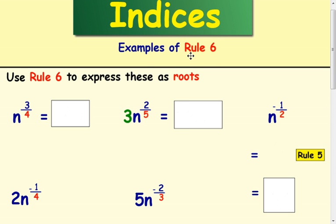In this lesson, we're going to look at some examples of Rule 6. So, the first example here, n to the power of 3 over 4. Now, we have to express these as roots. So, we know the bottom is the root and the top is the power. So, this will be the fourth root of n. I tend to put it in brackets and then cubed.